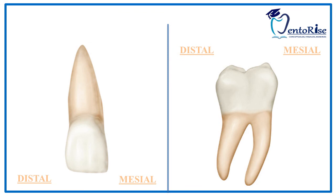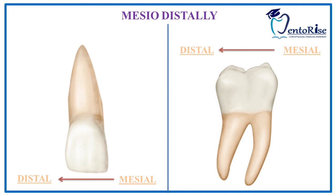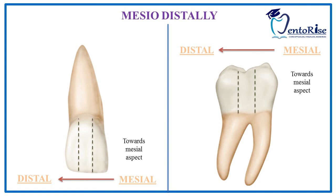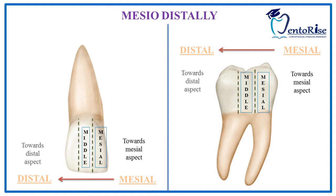Now let's look at our third approach, that is the mesiodistal approach. As the name implies, start from the mesial aspect and divide the crown as you move distally. Therefore, divide the crown as shown in the figure. The one third towards the mesial aspect is called the mesial third, the one third in the middle is called the middle third, and the one third towards the distal aspect is called the distal third.